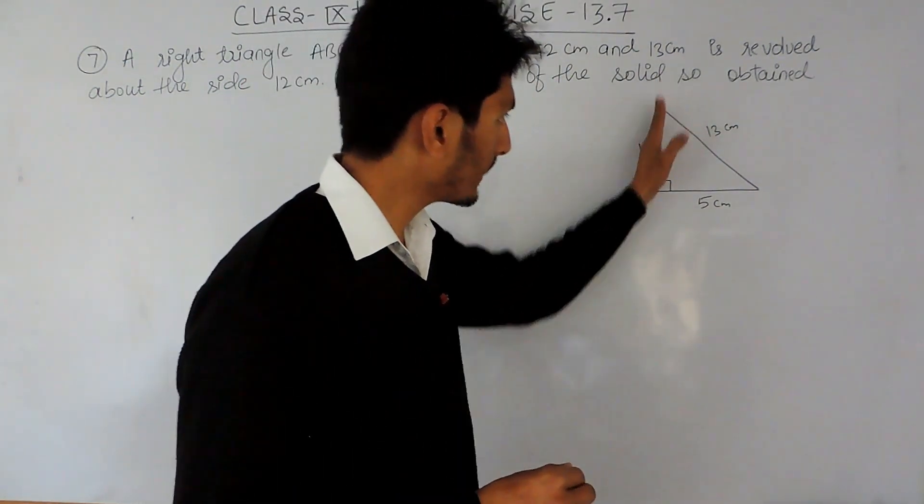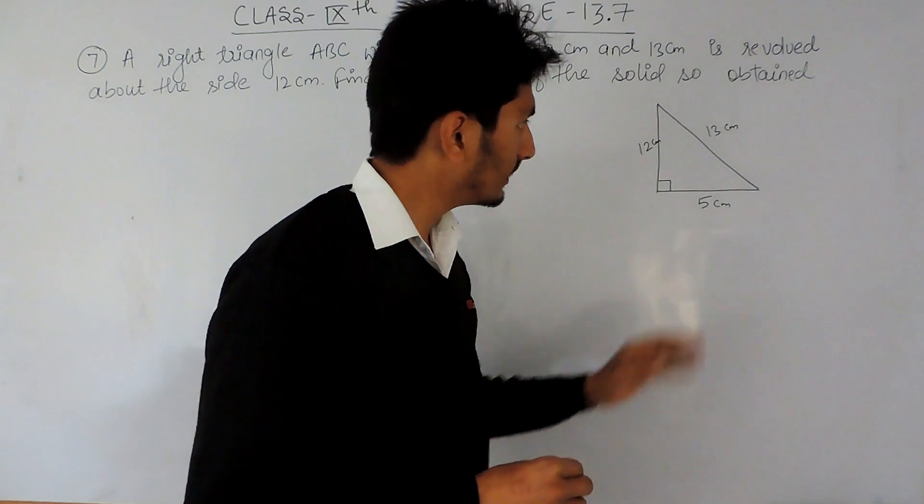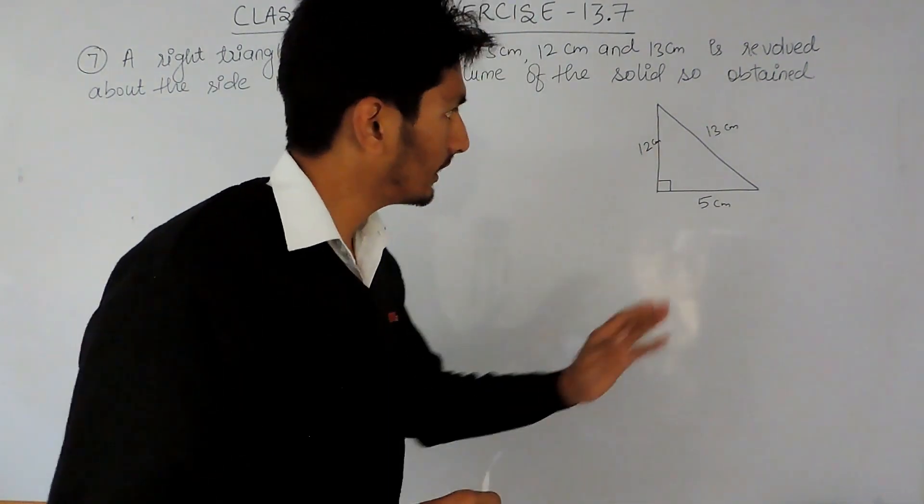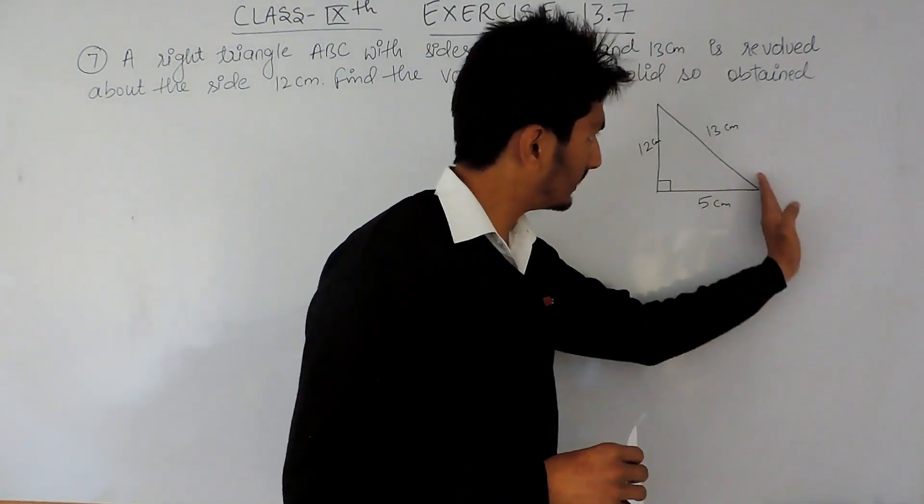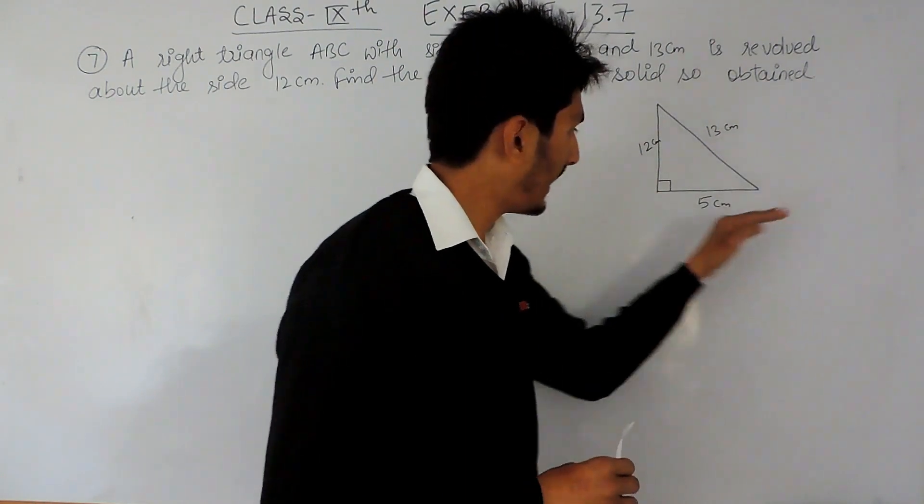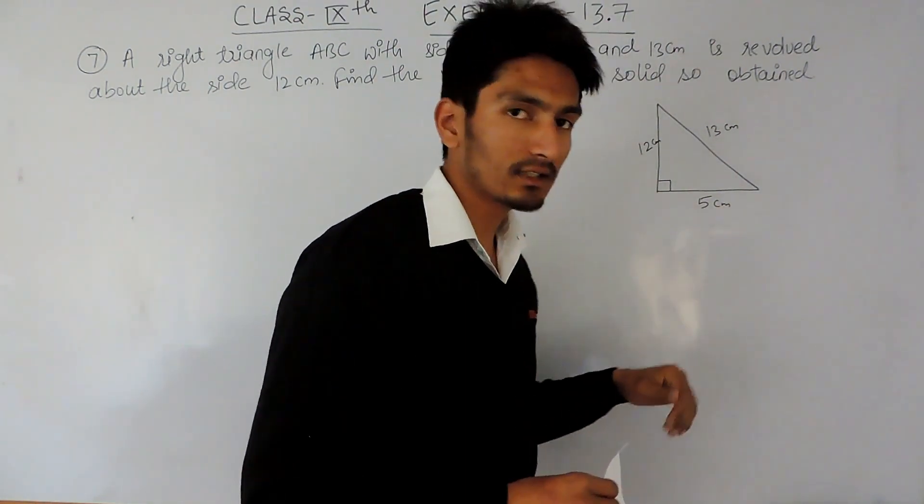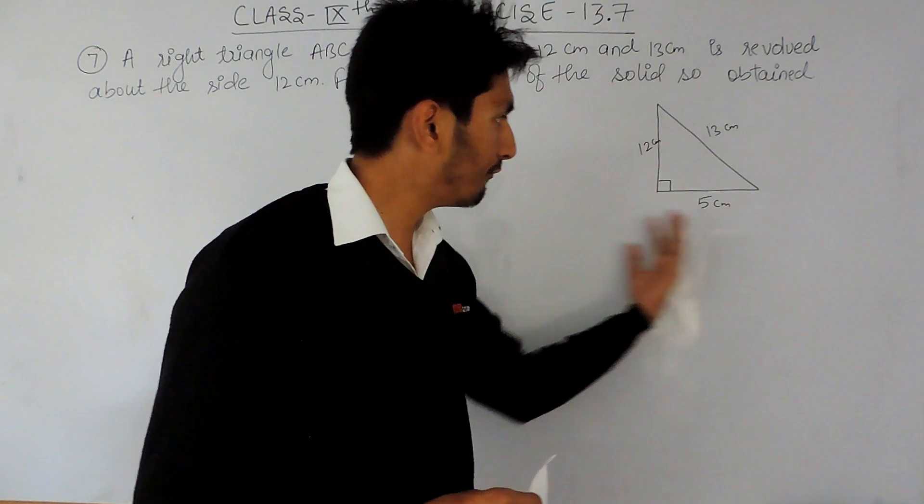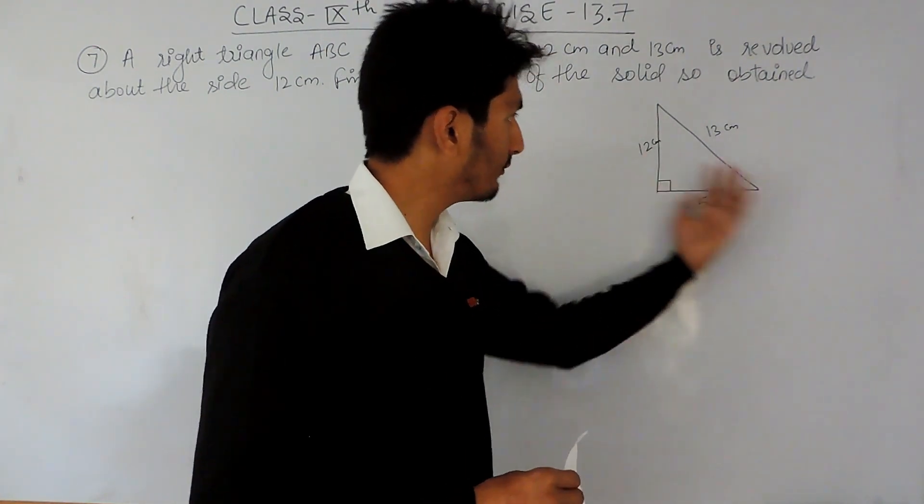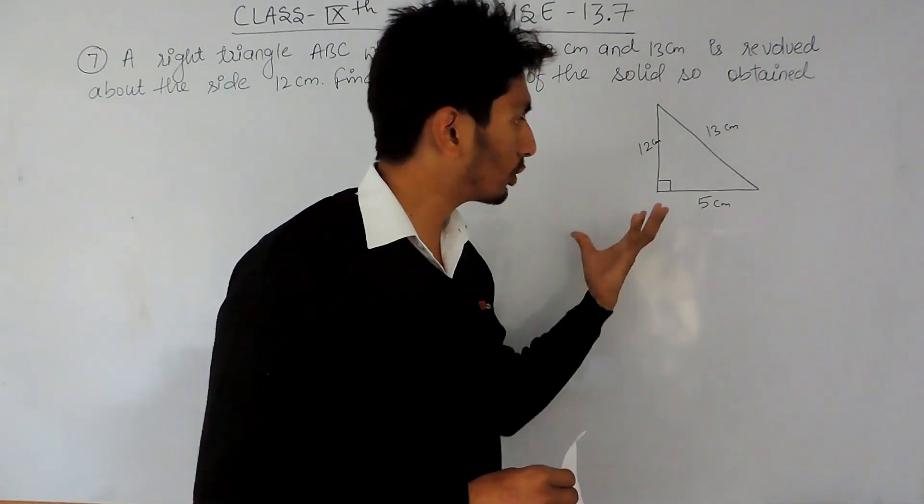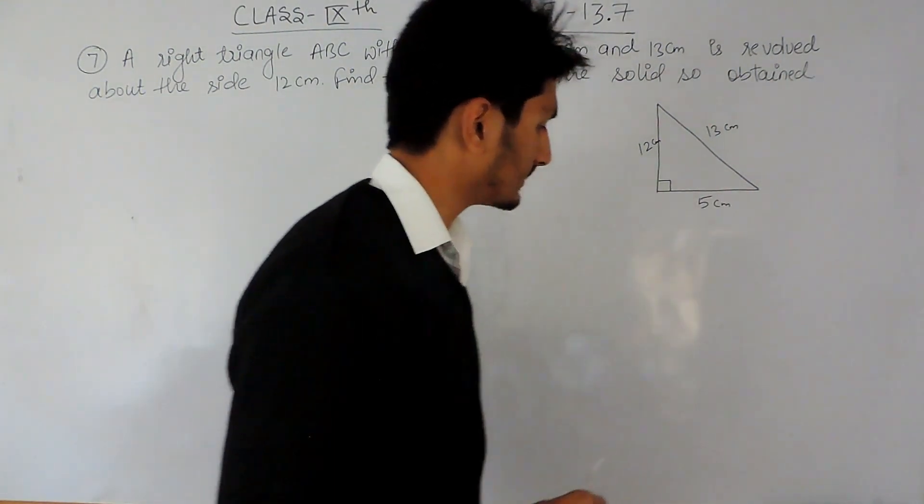This will act as the height, this will be the slant height, and this will be the radius for the circle formed after revolving this in the base of the cone. So this will be the radius.